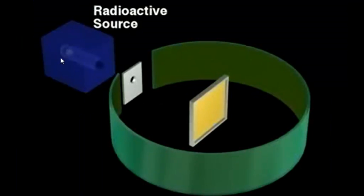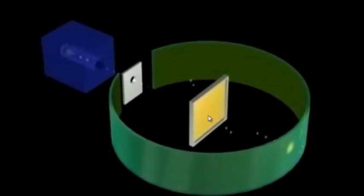So a radioactive source shoots positively charged alpha particles through a gold foil. Now most of the alpha particles come straight through. Some are deflected through small angles and every now and then one gets bounced back from the way it came.